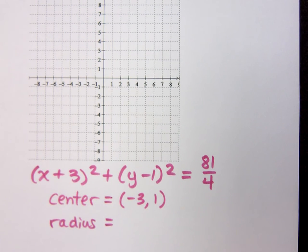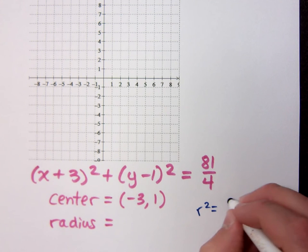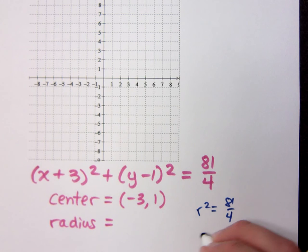The radius is what? 9 over 2, right? Because this guy right here, r squared is 81 over 4, so when I take the square root, I get 9 over 2.